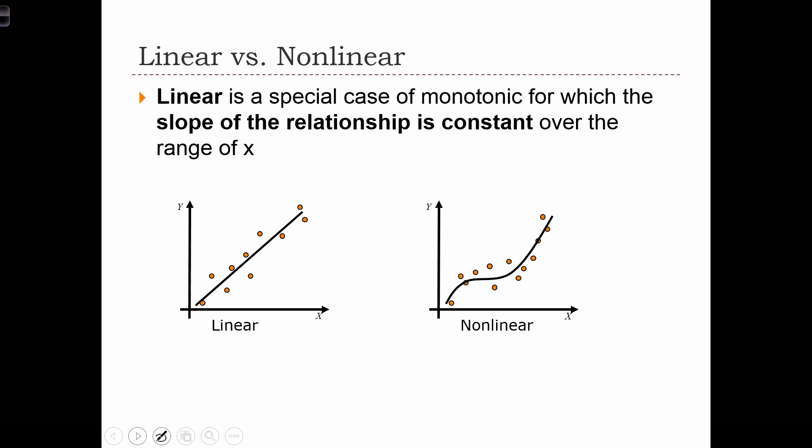We also have the difference between linear and non-linear relationships. Linear is a special case of a monotonic relationship for which the slope of the relationship is constant over the range of x. So here we see that no matter where we are in this scatter plot, if we were to estimate a slope through the curve or a trend line through the curve, it would always have the same slope.